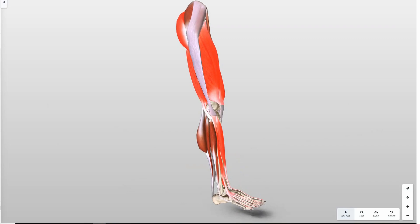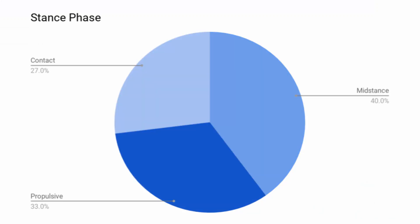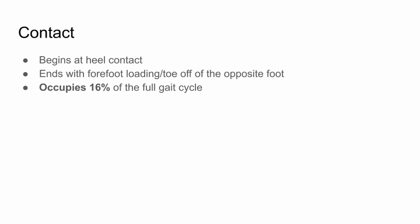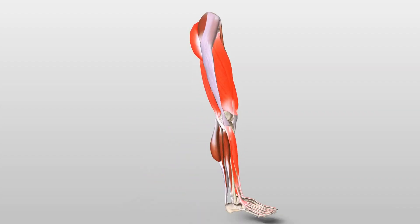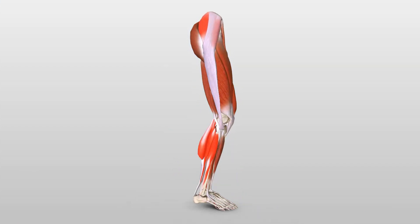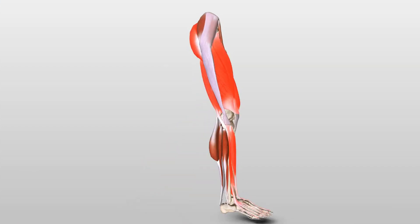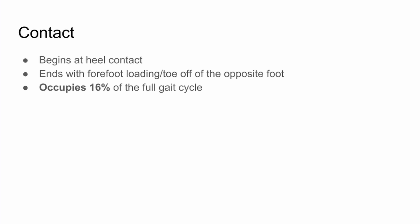It is important to know the percentages: 62% and 38%. The stance phase is broken down into contact phase, mid-stance, and propulsive. The big idea here is to know that mid-stance takes up the majority of the time, followed by propulsive, followed by contact. Contact phase begins at heel contact and ends with forefoot loading or toe-off of the opposite foot. It occupies about 16% of the total gait cycle, which is about 27% of the stance phase.